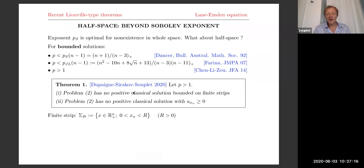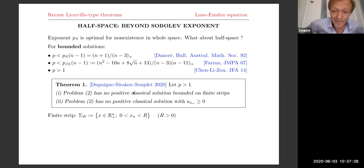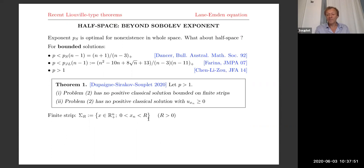Our result was obtained in collaboration with Louis Dupaigne and Boyan Sirakov this year. We were able to improve the Chen-Li-Zhao result in the following way. Take any P and consider solutions which are not bounded, but only bounded on finite strips. A finite strip is the part of the half space at finite distance from the boundary. If for each strip the solution is bounded, then this solution cannot exist — there can be no positive solution which stays bounded at finite distance of the boundary.